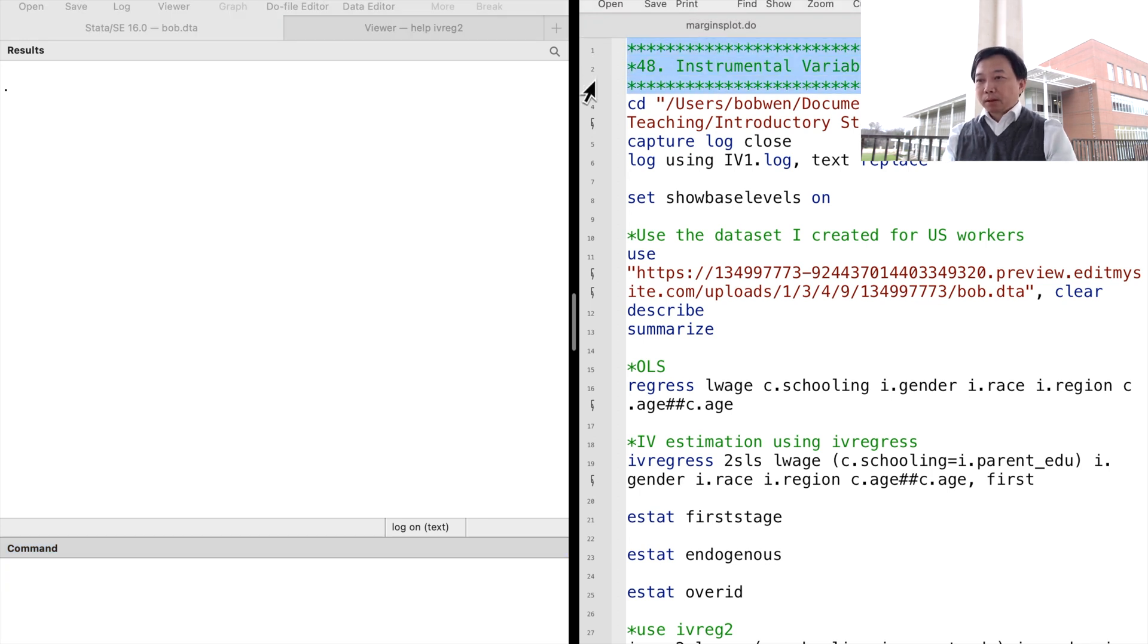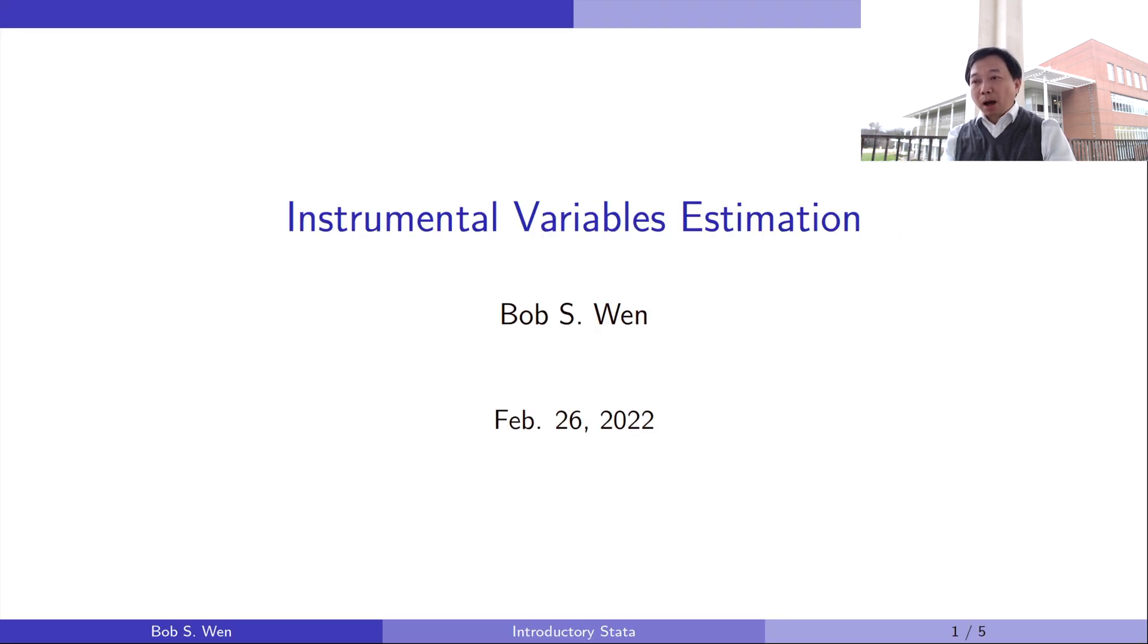Hi, I'm Bob. Economists often try to find the causal effect of an explanatory variable on the outcome variable.